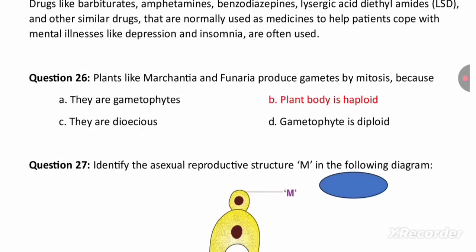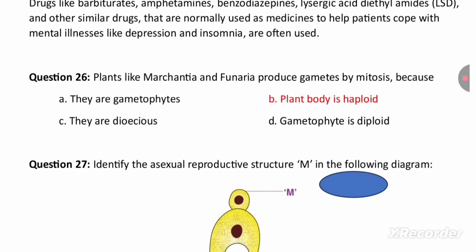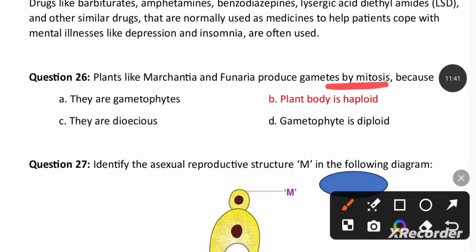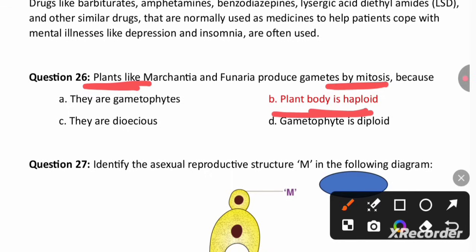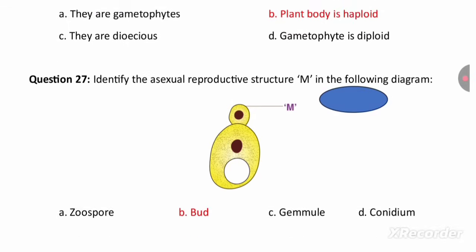Plants like Marchantia and Funaria produce gametes by mitosis, which is an equational division. If mitosis is used for gamete production, the plant body is definitely haploid. To produce haploid gametes, mitosis is performed, so the plant body is haploid in this case.